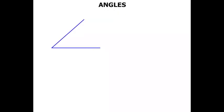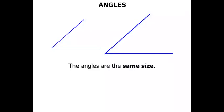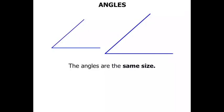Now if we consider this angle here and I'll reproduce it, but I seem to enlarge the angle. In fact the angles are the same size, because the amount of turn between the arms is the same in each. So the arms got bigger but the amount of turn is the same in each. So that's the angle.